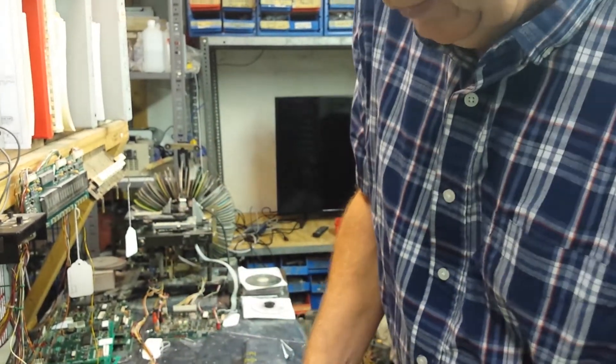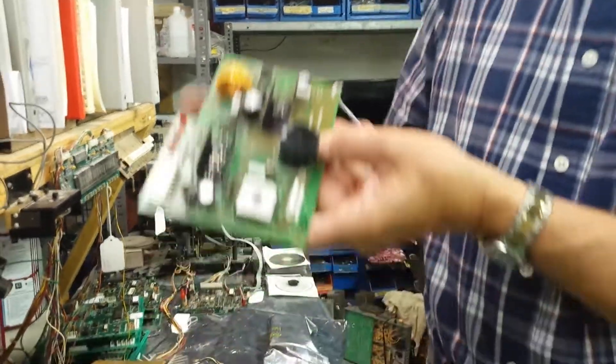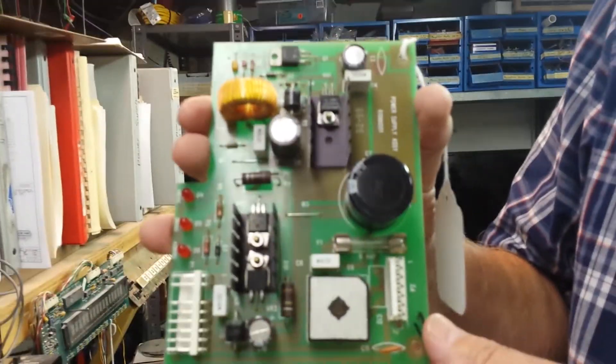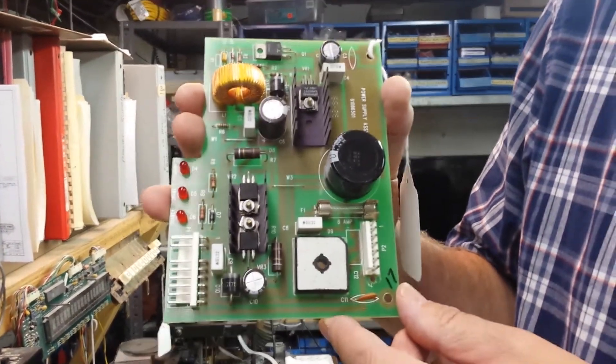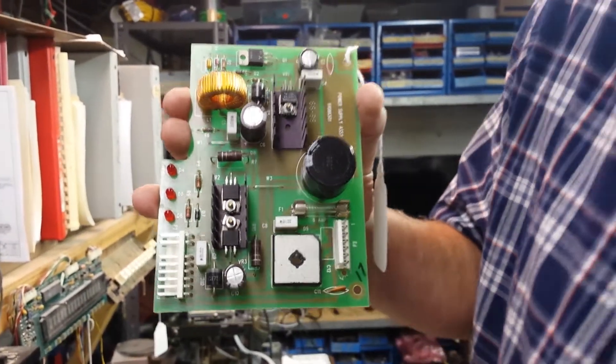Then they went to a newer type board, this one here, for like probably the E, F, G, on up, and this is the newer type board. And the difference from the new board to the older boards is this.